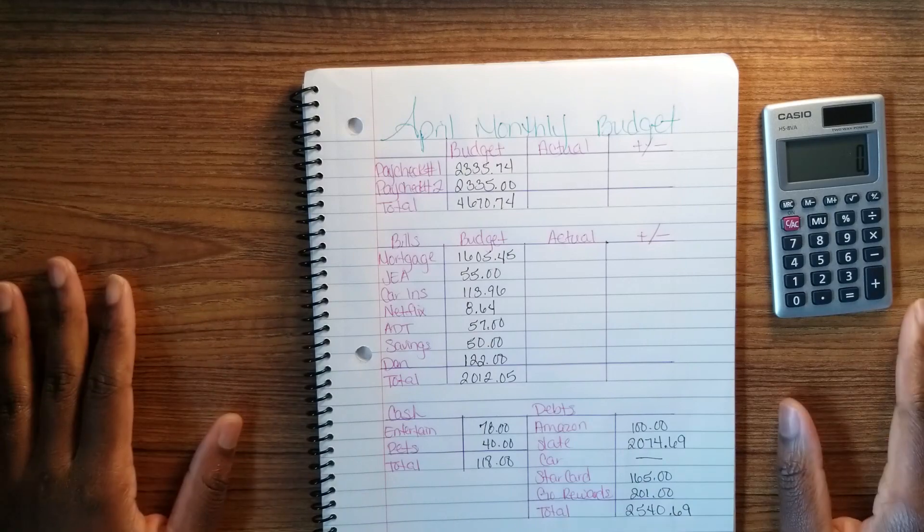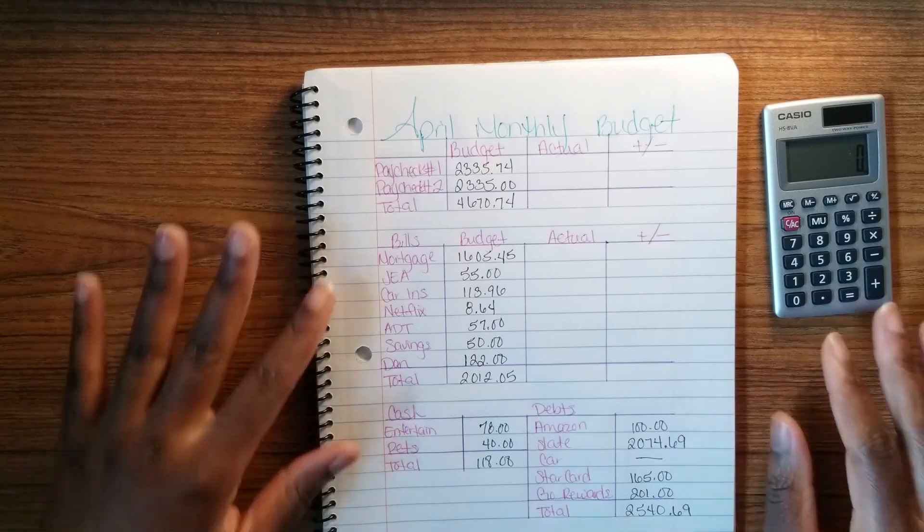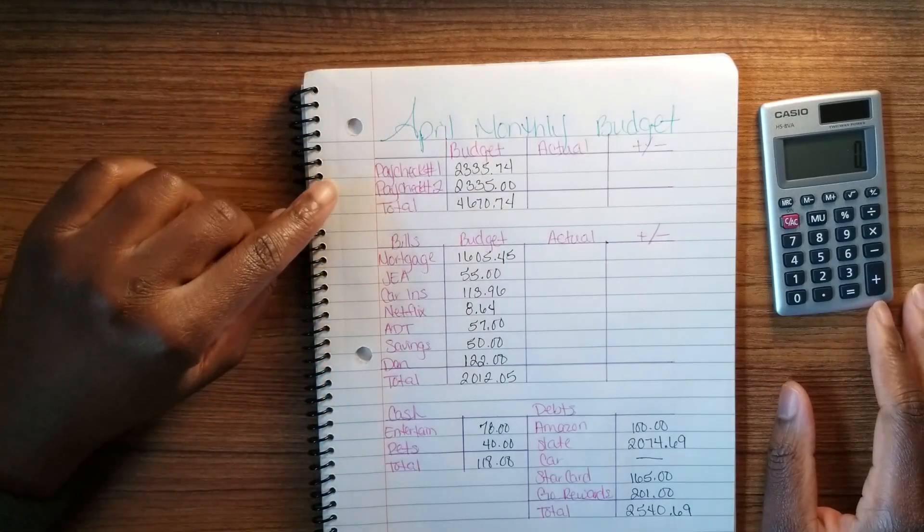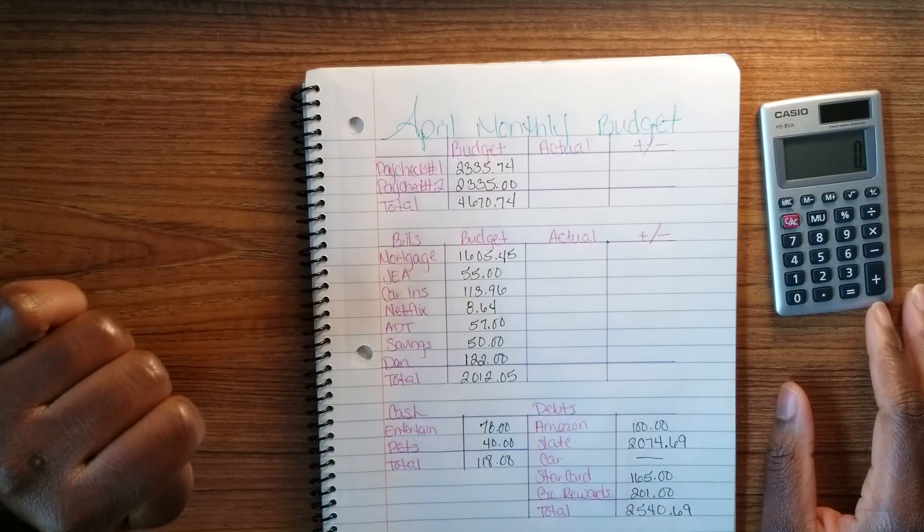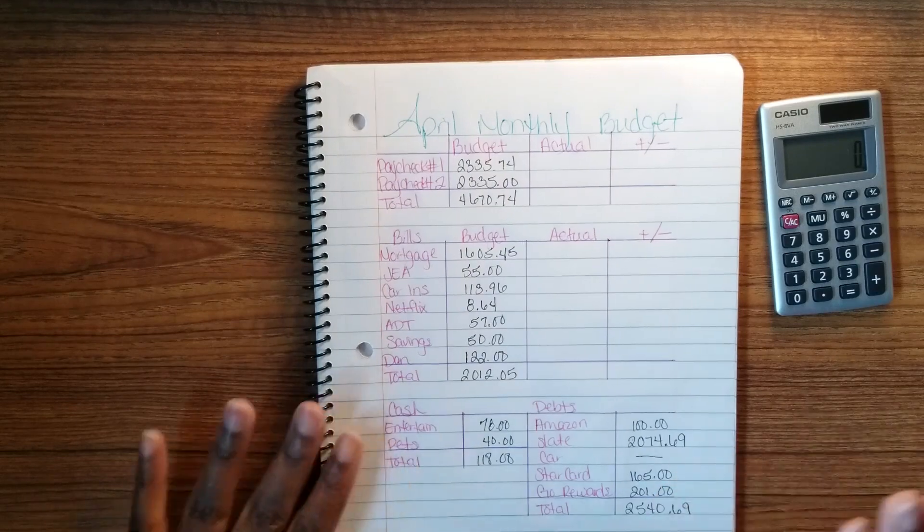So that's pretty much my monthly budget. Real quick, I want to go ahead and set up my paycheck to paycheck budget. What I'm going to do is just do paycheck number one because I don't know exactly what paycheck number two is going to be. Let me just set up paycheck number one.